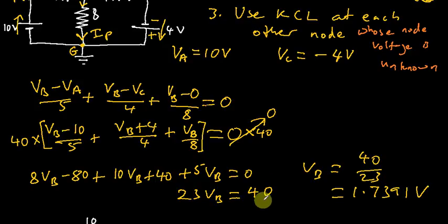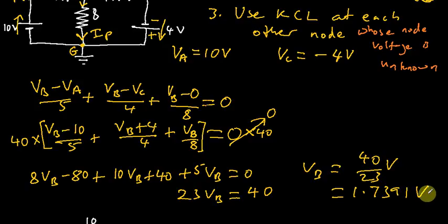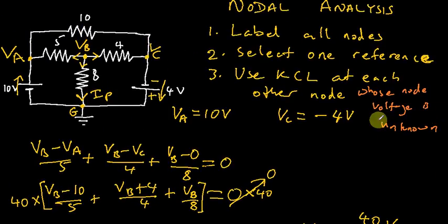23VB being equal to minus 80 minus 40, which is minus 40. Taking that to the right-hand side, you end up with 40. So we find our VB being equal to 40 over 23 volts, which is equal to 1.7391 volts. Now we have found VB, but that's not actually what we are told to find. We are told to find IP — the current coming downwards.